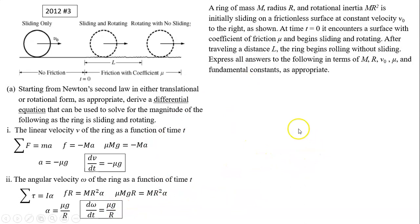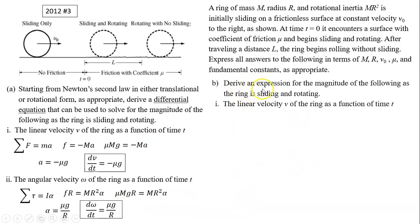Part b: You'll have to derive an expression for the magnitude of the following as the ring is sliding and rotating. So we know the derivative for v. How do we find v? There are a couple ways. You can do the integral to find v, but in this case, since acceleration is constant, we already know the equations for constant acceleration. v is just equals to v₀ plus at. We know a is negative μg, substitute in v equals to v₀ minus μgt.